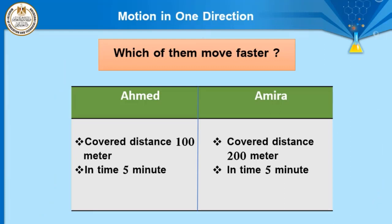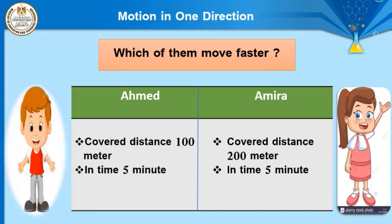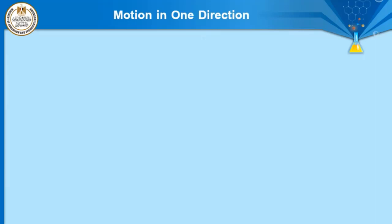Another example: which of them moves faster — Ahmed or Amira? In this case, Ahmed covers 100 meters in 5 minutes, but Amira covers 200 meters in 5 minutes. Now Amira is faster than Ahmed. Why? Because they covered different distances in the same time, but Ahmed covered a shorter distance than Amira in the same time. So Amira is faster than Ahmed.